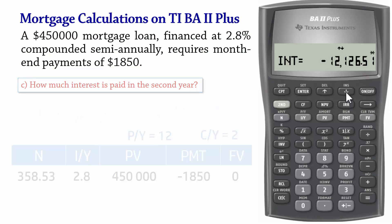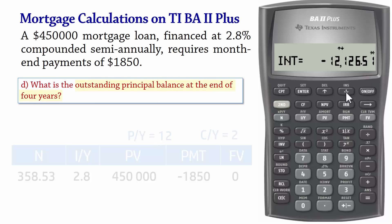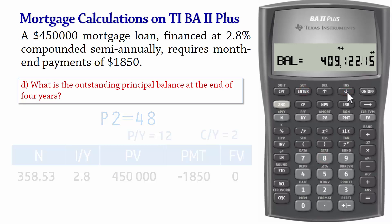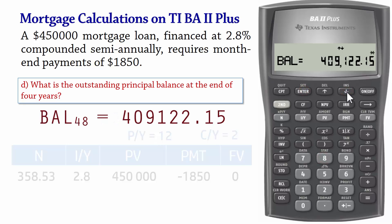Next we want to calculate the outstanding balance at the end of the first 4 years. Since payments are made monthly, in 4 years we have 4 times 12, which equals 48 payments. So 2nd Amort. P1 can be any value less than 48, but we want to be sure we set P2 to 48, Enter. And when we scroll down, we see that the balance is $409,122.15.